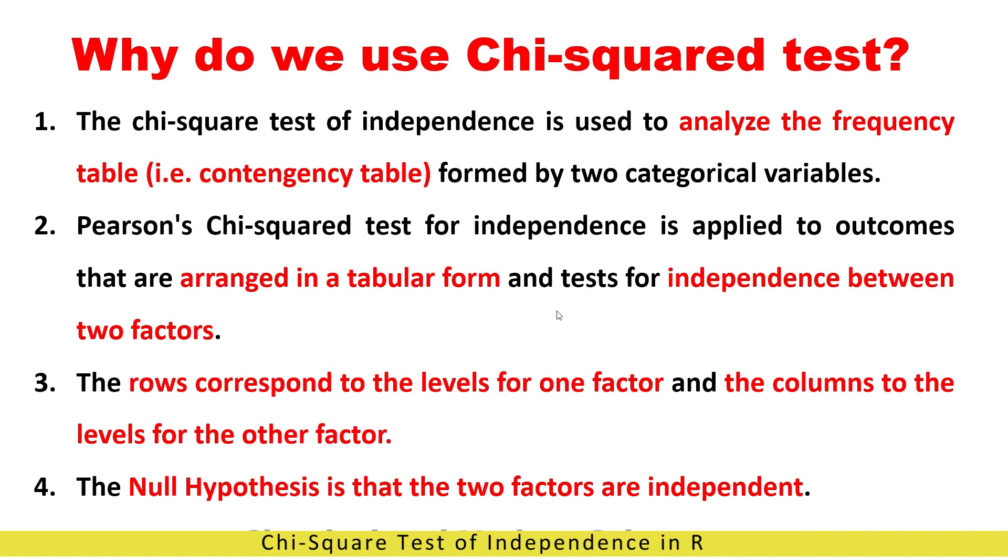So first of all, I will tell you why do we use chi-square test. The chi-square test of independence is used to analyze frequency tables formed by two categorical variables.